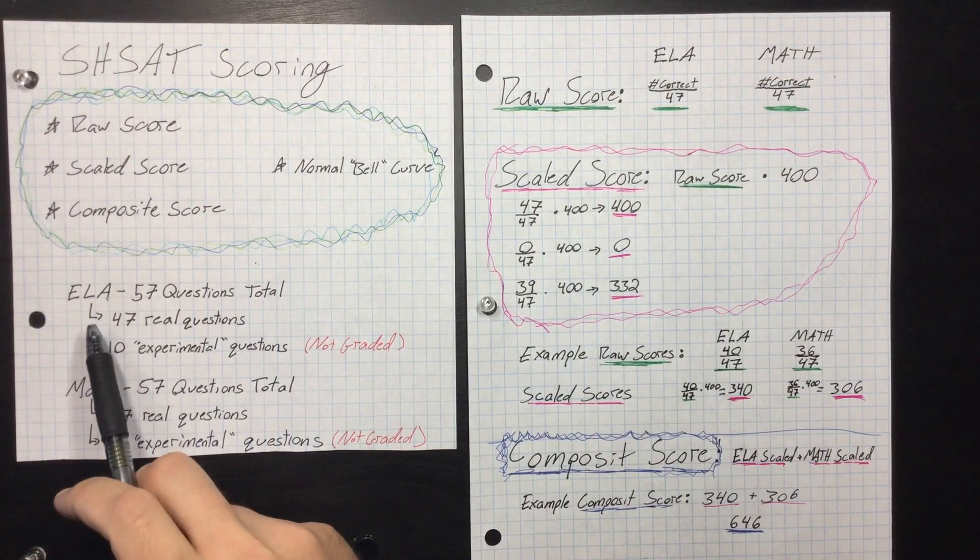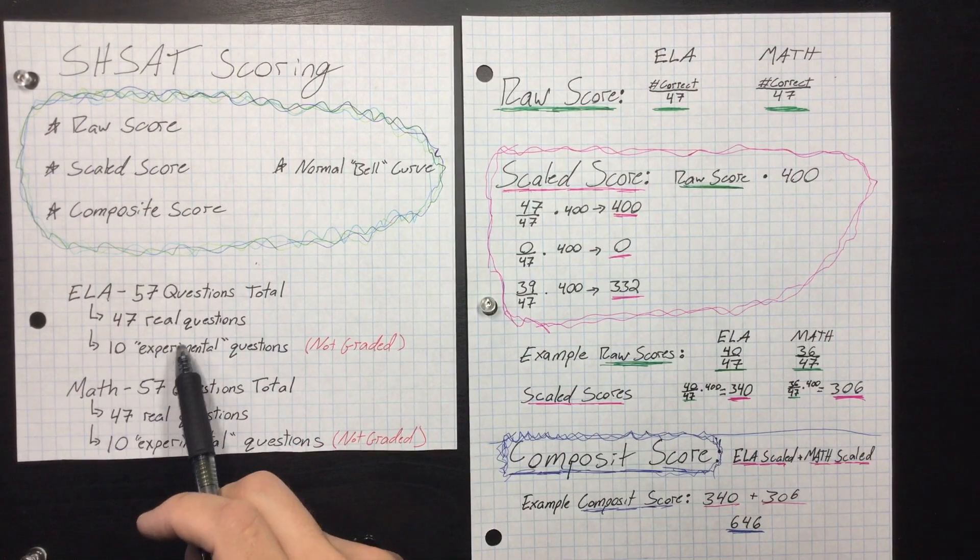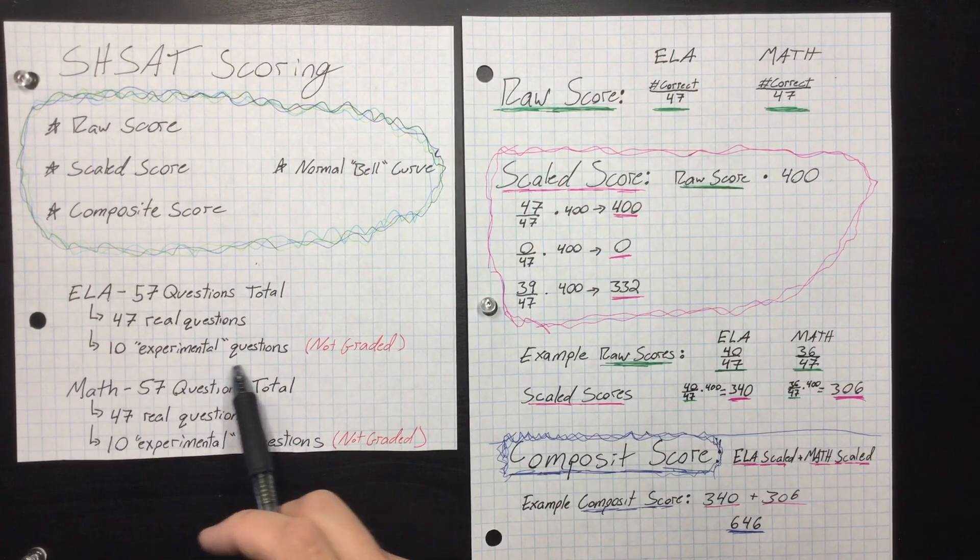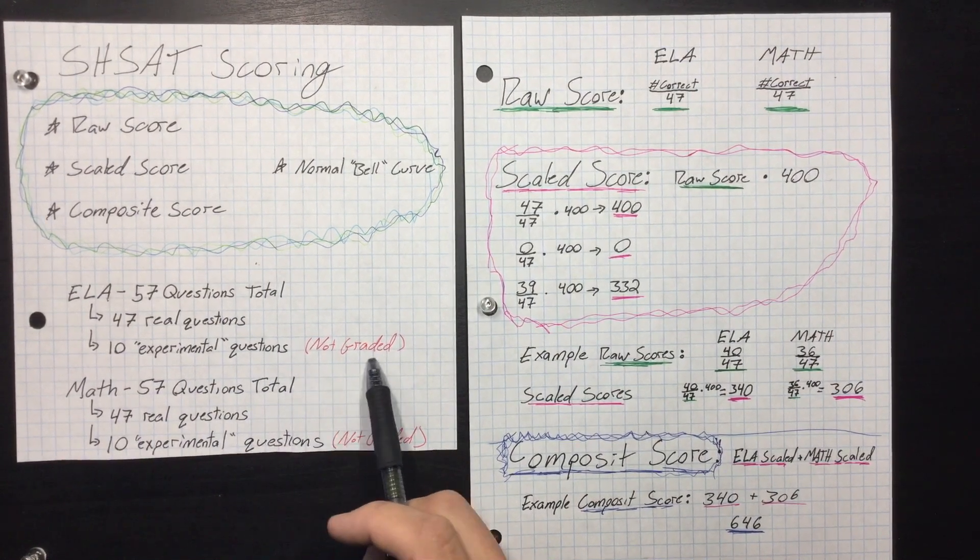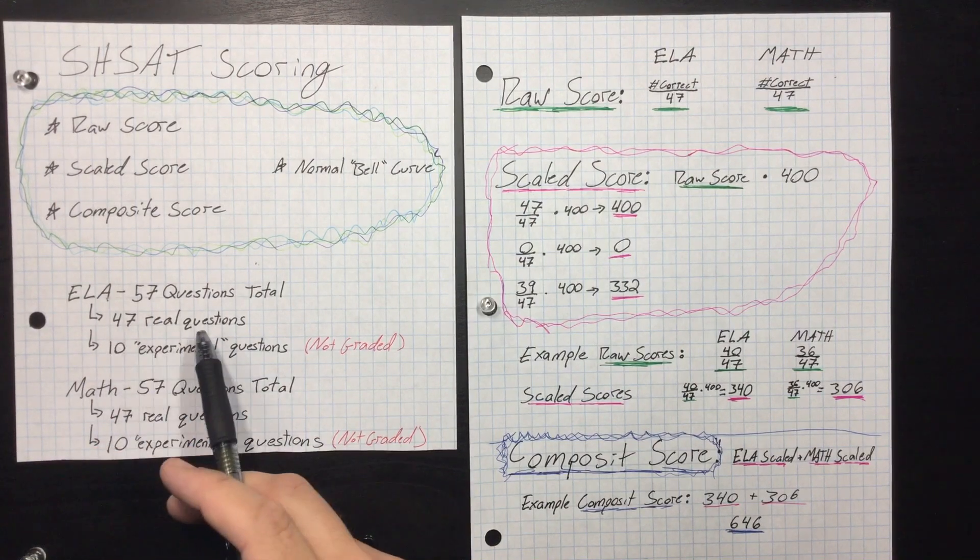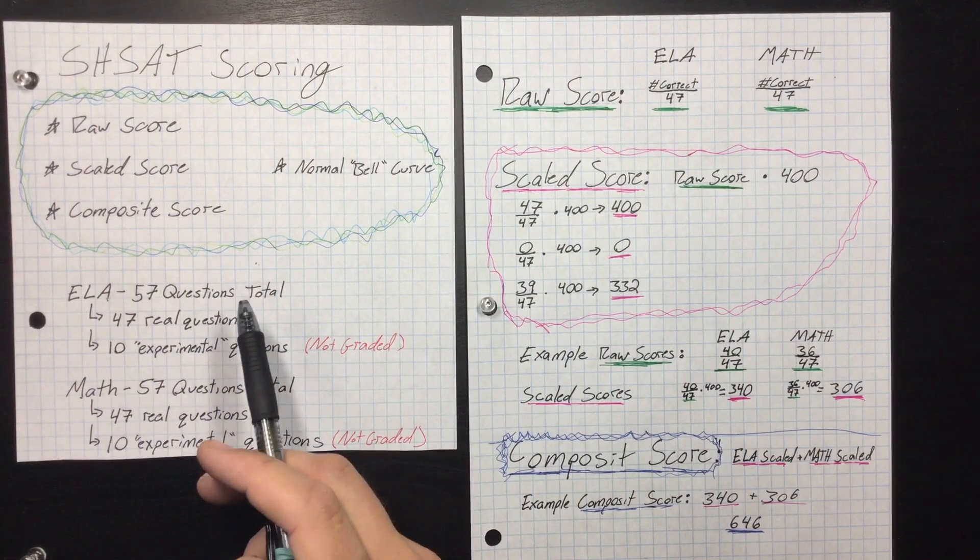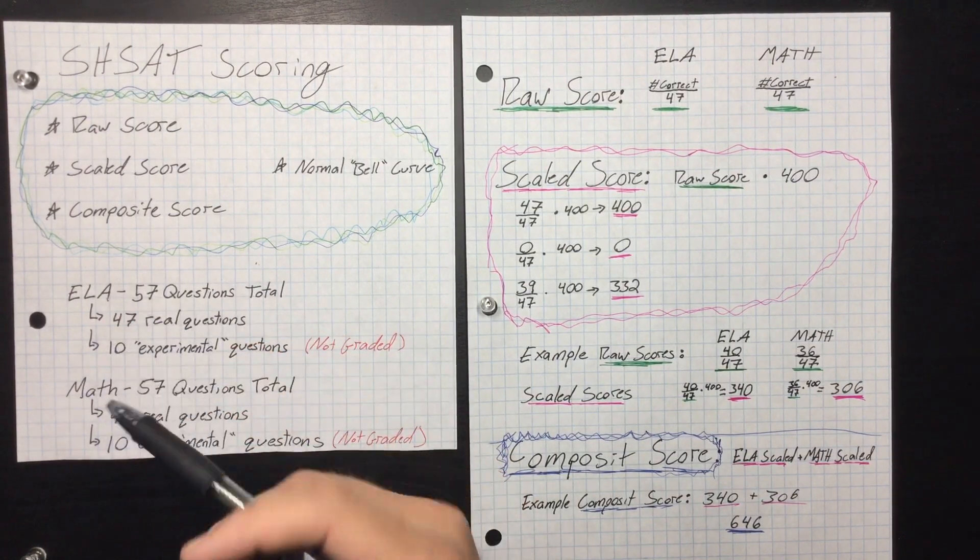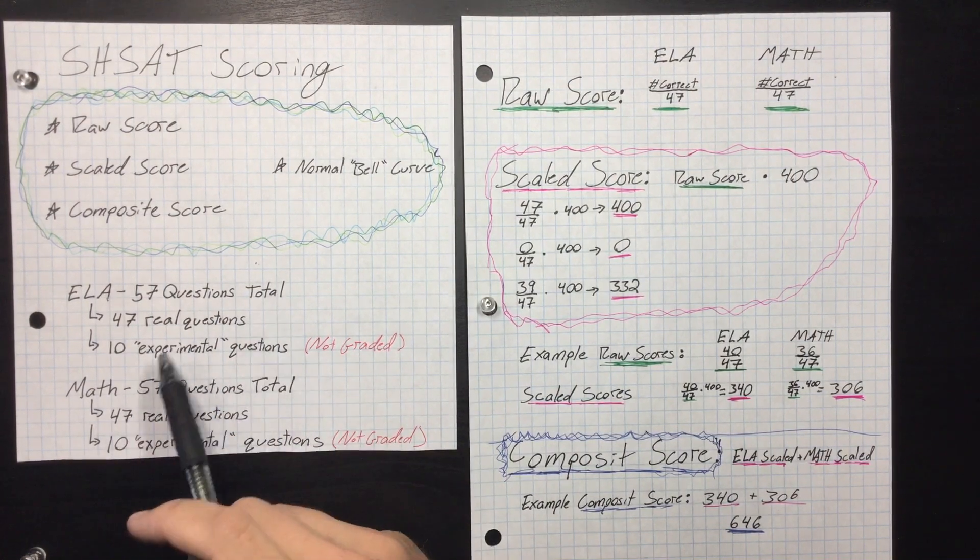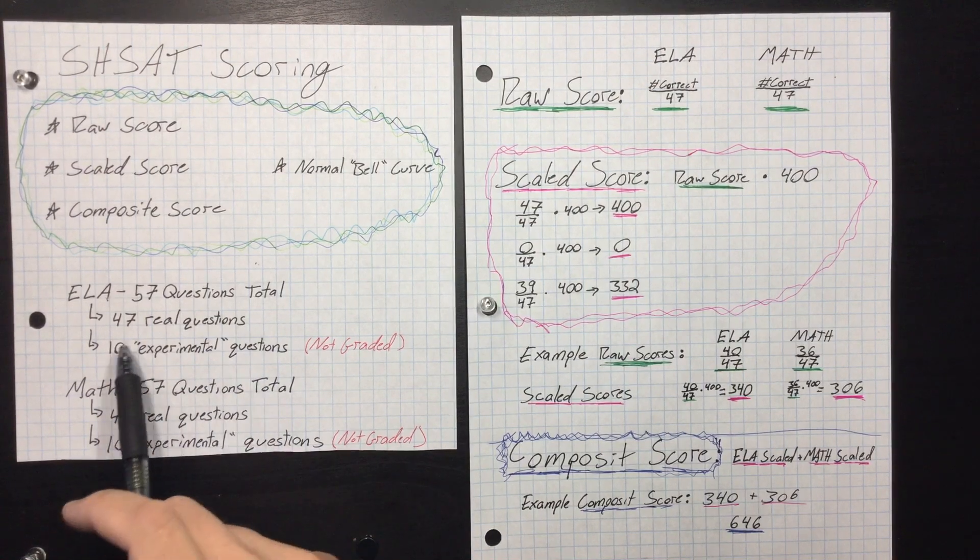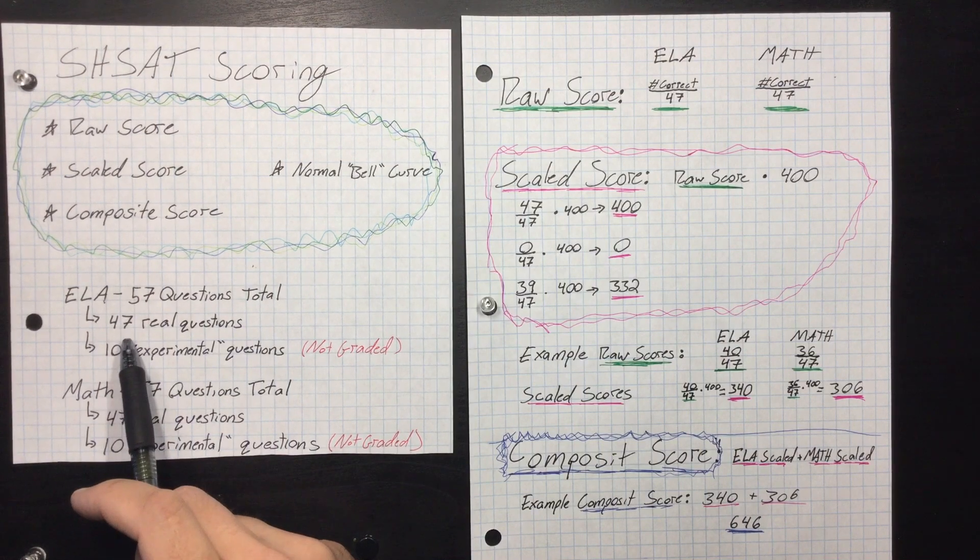So just to break it down simple, the ELA section has 57 questions total. 47 of them are real questions, 10 are experimental questions, and these experimental questions are not graded. They are mixed into the 47 real questions, and most of the time you won't know that you're answering an experimental question. They throw them in there to kind of learn about the student body and see what concepts they know or don't know. But they don't grade these experimental questions, so really they only care about how many you get out of the 47 real questions.